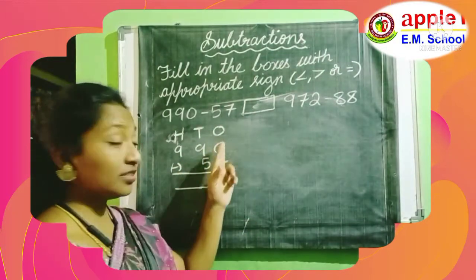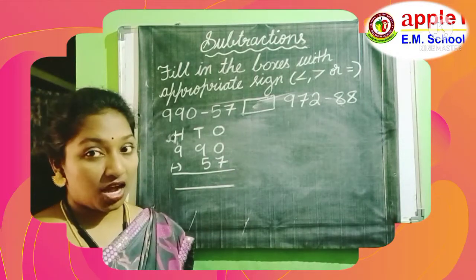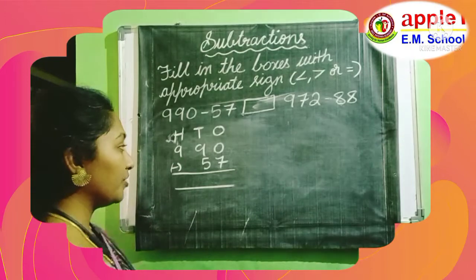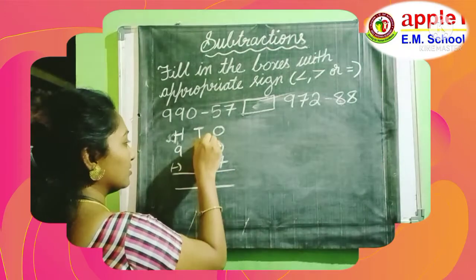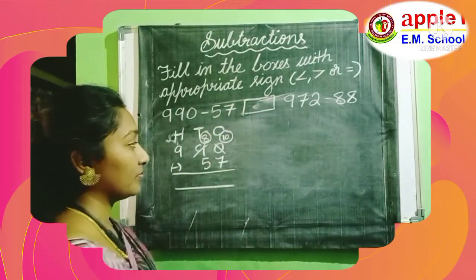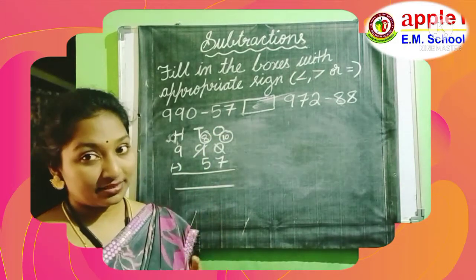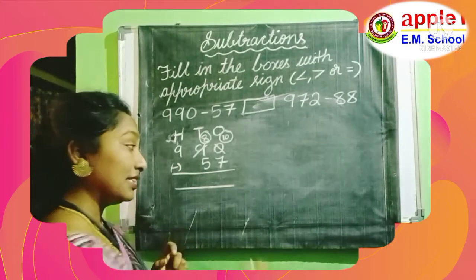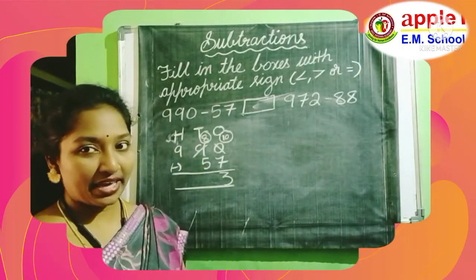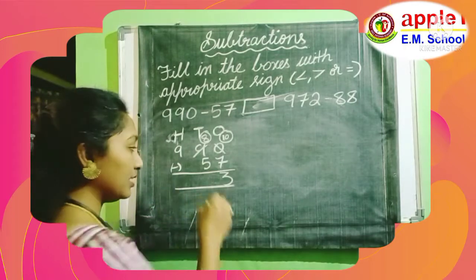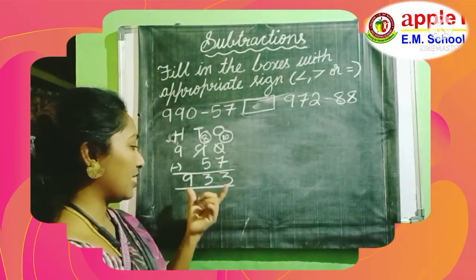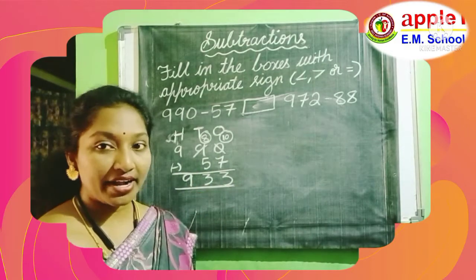0 minus 7 — we can't do it. Borrow from the tens place. Tens becomes 8, ones becomes 10. 10 minus 7 is 3. Next, 8 minus 5 is 3. And we have 9 in the hundreds place. So the answer is 933.